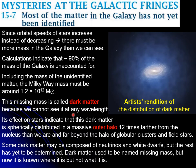This dark matter is supposed to be surrounding the Milky Way in a spherical halo that is extremely large. It is 12 times farther from the nucleus than we are, and it is far beyond the halo of globular clusters that we have around the galaxy.